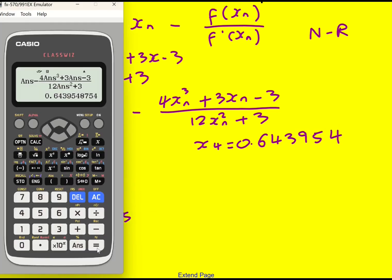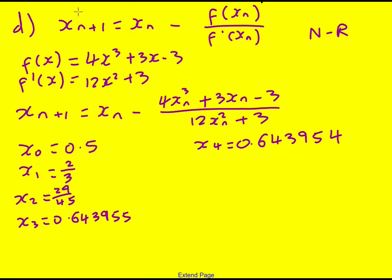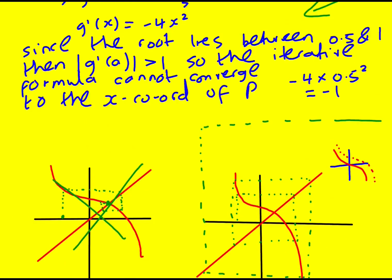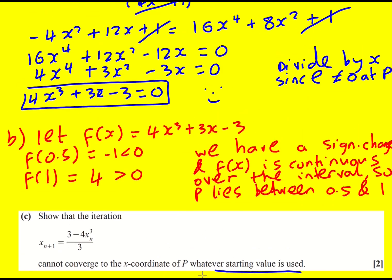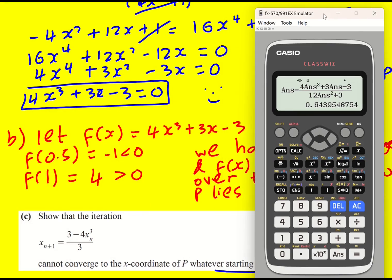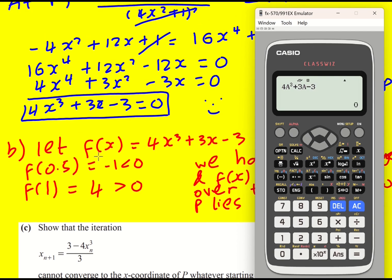So x to five decimal places is going to be 0.64395. And then we need the y-coordinate. Now, before I find the y-coordinate, I'm just going to give you a little suggestion. Just to check that you've done it right, put this back in. And put it back into the original equation that we're trying to solve. Because it is so easy to make a mistake. But if we get zero, then we can be pretty happy with that. And I'm using the exact value. So we can be pretty happy with that.